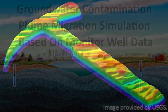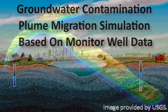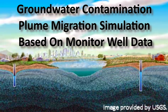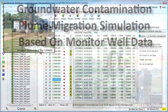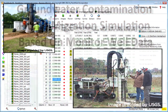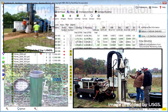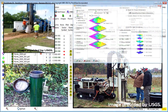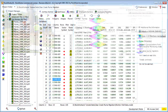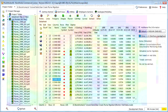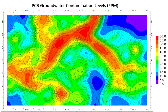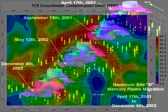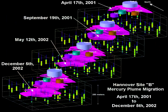RockWorks is commonly used to create static two and three-dimensional groundwater contamination models based on monitor well data and a variety of modeling algorithms. These models are typically displayed as two-dimensional contour maps or three-dimensional block models.